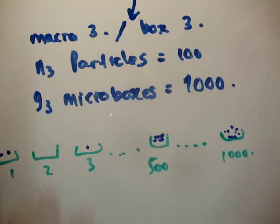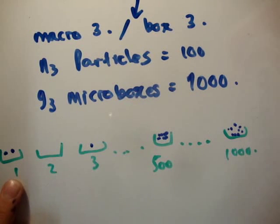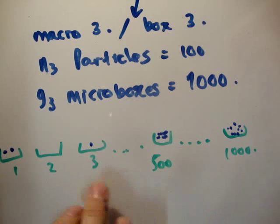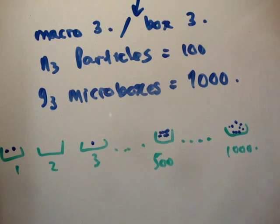So, now I've put, in this case, 2 particles into microbox 1, say, 20 particles into microbox 500, 1 particle into microbox 3, and so on. Out of our 100 particles, that went into macrobox number 3. Now, we're trying to work out, what is the multiplicity of this? What is the number? How many ways can we rearrange this?